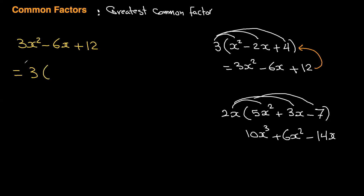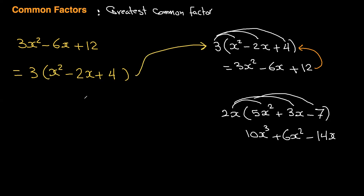Once you identify 3 as the greatest common factor, you take it out. To find what goes inside the brackets, divide each term by 3: 3x squared divided by 3 gives x squared, 6x divided by 3 gives 2x, and 12 divided by 3 gives 4. So the factored form is 3 times the quantity x squared minus 2x plus 4, which matches the original distribution.